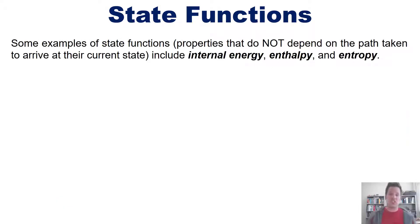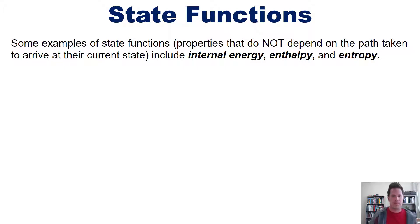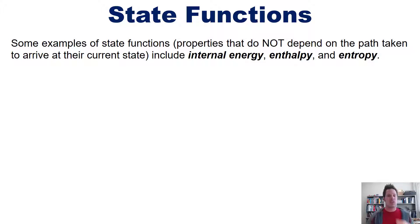Some examples of state functions — that is, properties that do not depend on the path taken to arrive at their current state — include internal energy, enthalpy, and entropy. Enthalpy we'll talk about in just a moment, and entropy we'll talk about in a later video linked in the description below.